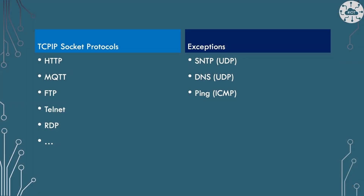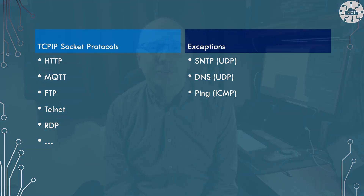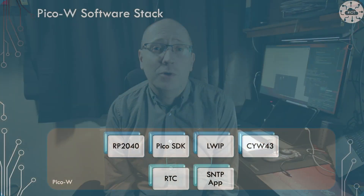All of these protocols use TCP/IP socket communications. When I started writing down a low-level list I quickly found that most of the internet communications we use each day use TCP/IP sockets. There are alternatives such as UDP and ICMP, but relatively few services use these. I've done a video previously on SNTP network time protocol, and that uses UDP.